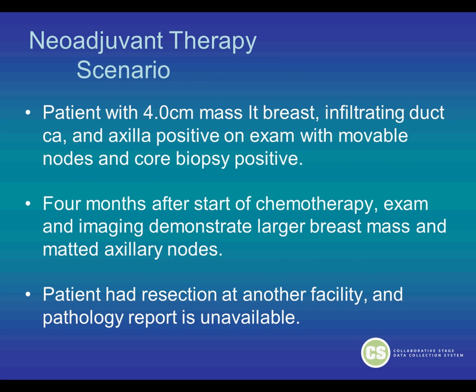Here's a scenario to help you better understand. A patient has a 4 cm mass in the left breast, infiltrating duct carcinoma, and the axilla is positive on exam with movable lymph nodes and a core biopsy that was positive. Four months after the start of chemotherapy, the exam and imaging demonstrate a larger breast mass and matted axillary lymph nodes.